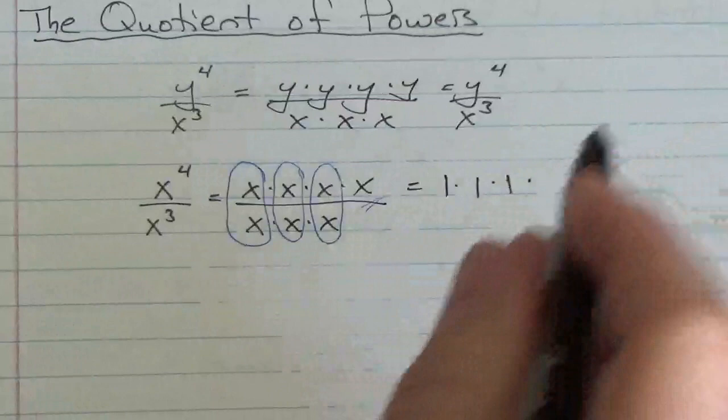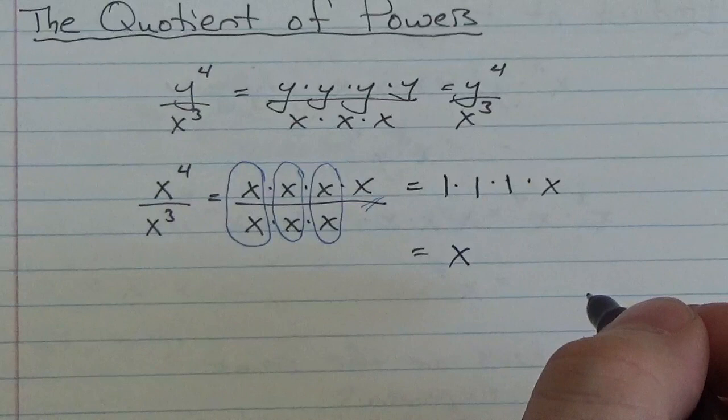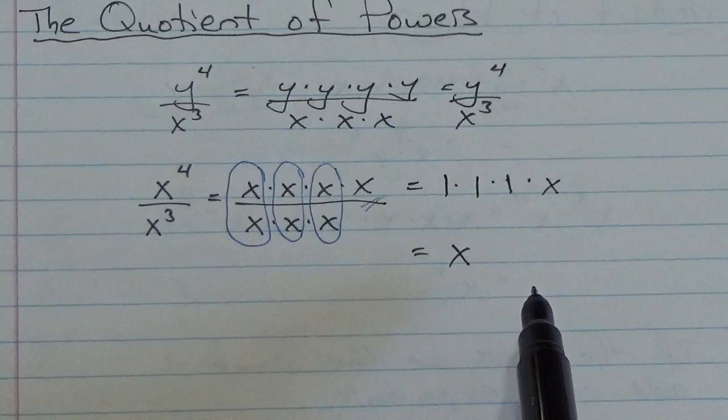And then there's this x left over right there. I couldn't pair it up with anything, so it's kind of a left over factor. And so, what I get here is one times one times one times x, which is just going to be x. Okay? So, how many factors of x am I left with here? One. Now, what's the shortcut?